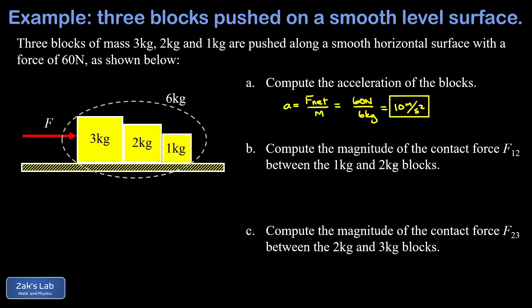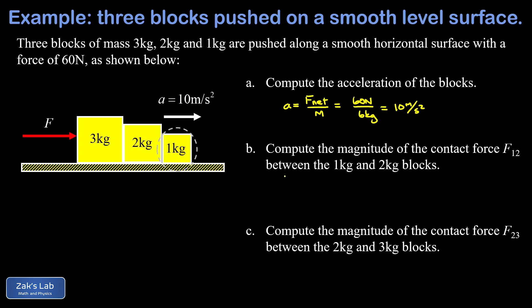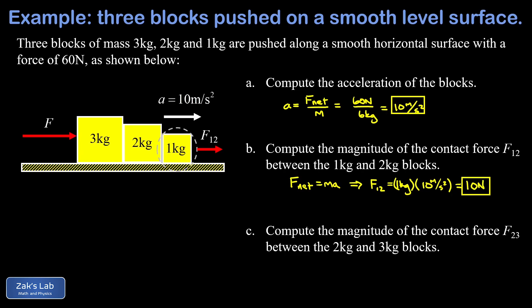In the next part we're asked to compute the magnitude of the contact force F12 between the one kilogram and two kilogram blocks. I zoom in on the one kilogram block — it's accelerating at 10 m/s², and the reason is that the two kilogram block is pushing directly on it with force F12 to the right. Writing Newton's Second Law: F_net equals ma, and F_net on the one kilogram block is just F12. So F12 equals 1 kilogram times 10 m/s², which gives 10 newtons.